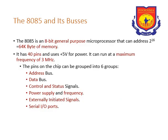The microprocessor 8085 is an 8-bit general purpose microprocessor that can handle 2 to the power 16, equal to 64,000 memory bytes. It has 40 pins and uses plus 5 volts of power. It can run at a maximum frequency of 3 MHz.